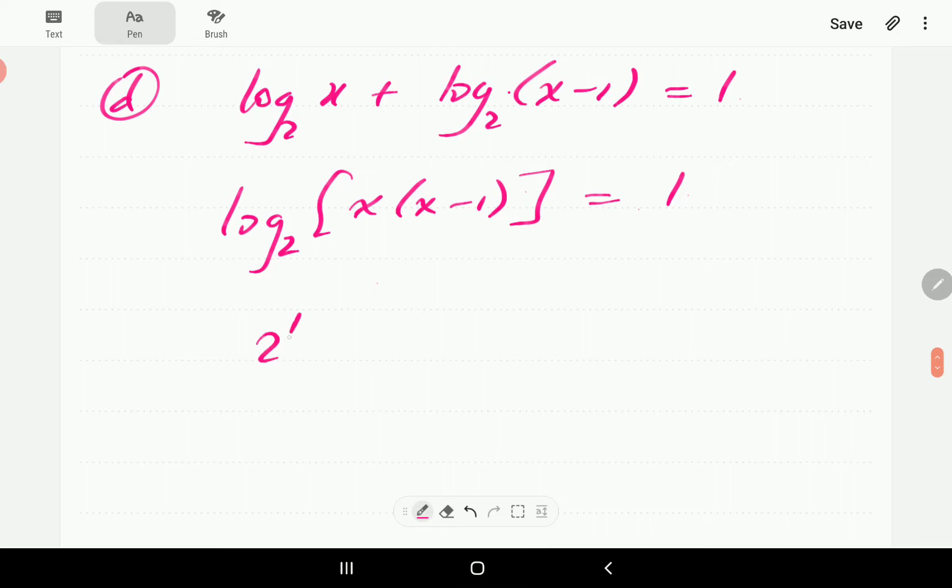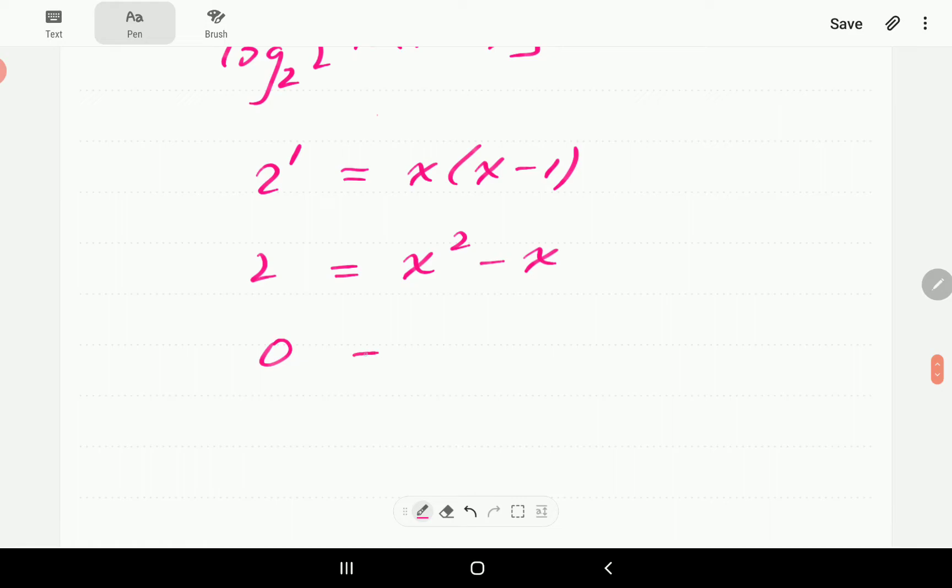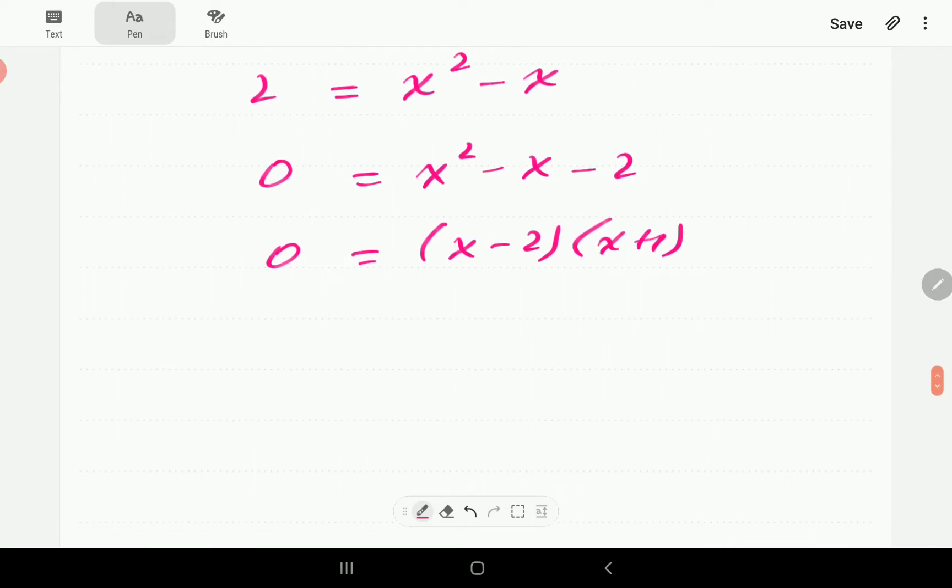Then writing this in exponential form is telling us that 2 to the power of 1 is equal to x into x minus 1. So 2 is x squared minus x. To bring everything to the one side, this is what we have, which is a quadratic, which we can factorize.